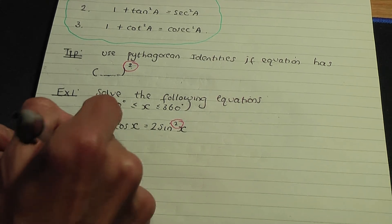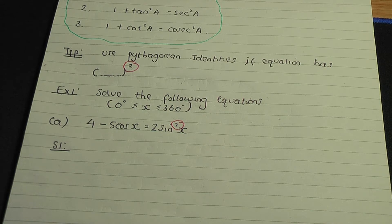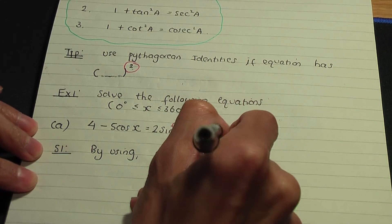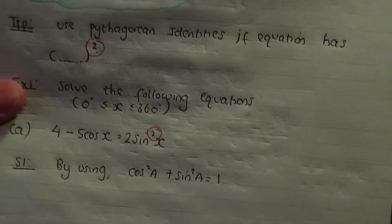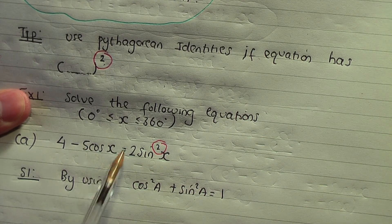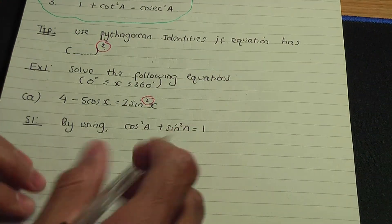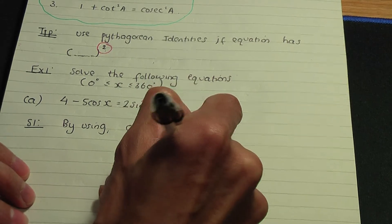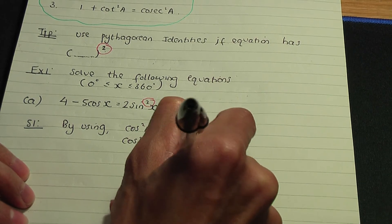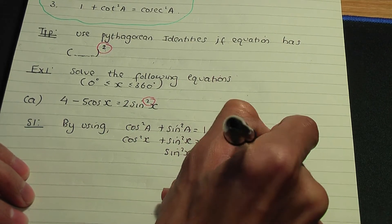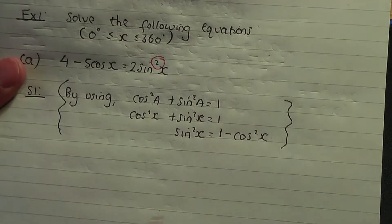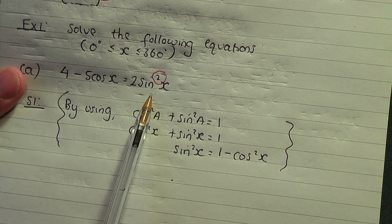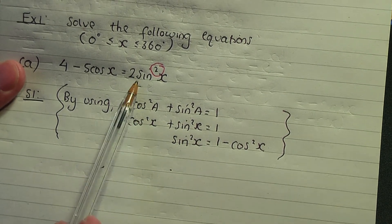Step number one: carefully select your identity. We're going to use cos squared x plus sine squared x equals 1. We rearrange to get sine squared x equals 1 minus cos squared x. This is our side calculation — we're going to replace the sine squared term with 1 minus cos squared x in our equation.